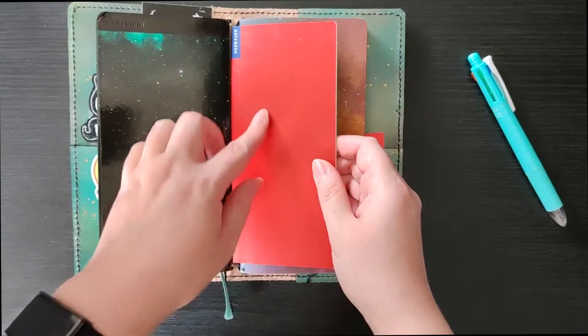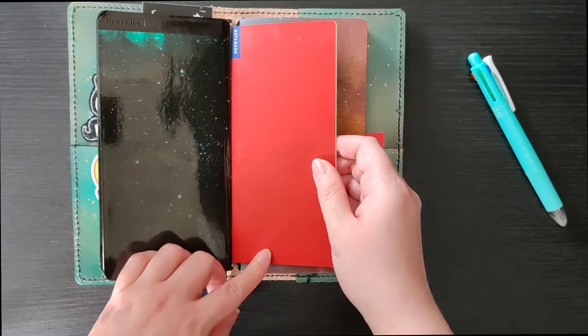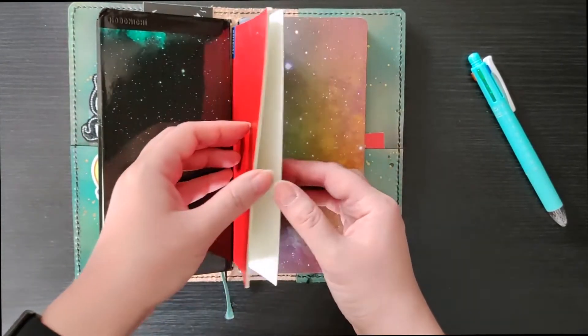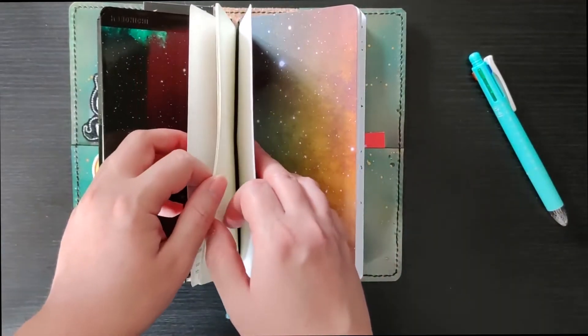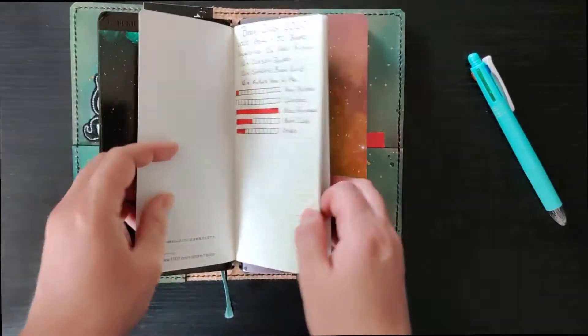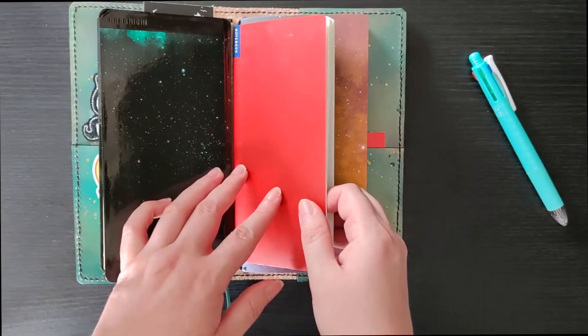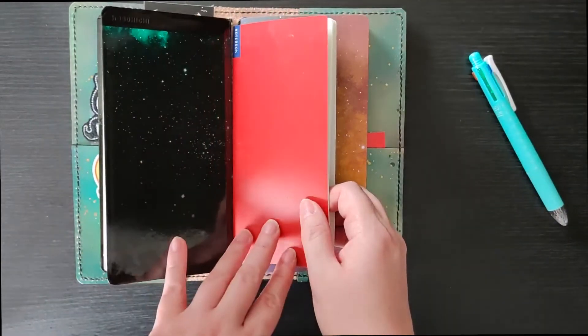So this insert is one of the official Hobonichi Weeks booklets so it's got Tomoe River paper in it so it isn't very thick but there's quite a lot of pages in it.